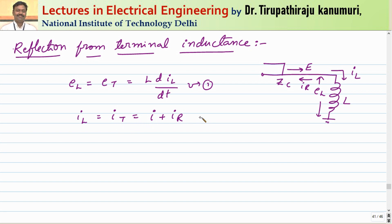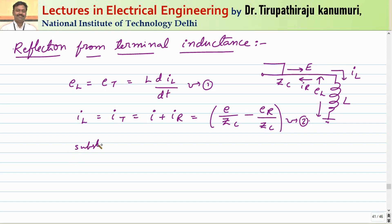The incident current i equals the incident voltage e divided by Zc — we have already seen this in the first lecture on traveling waves. The reflected current ir equals minus er divided by Zc (equation 2). Substituting equation 2 into equation 1: in place of il we substitute, giving el equals L into d/dt of (e/Zc minus er/Zc).